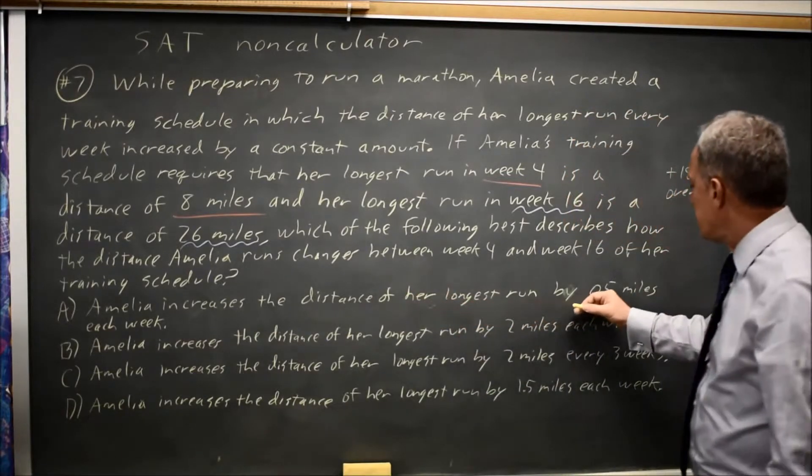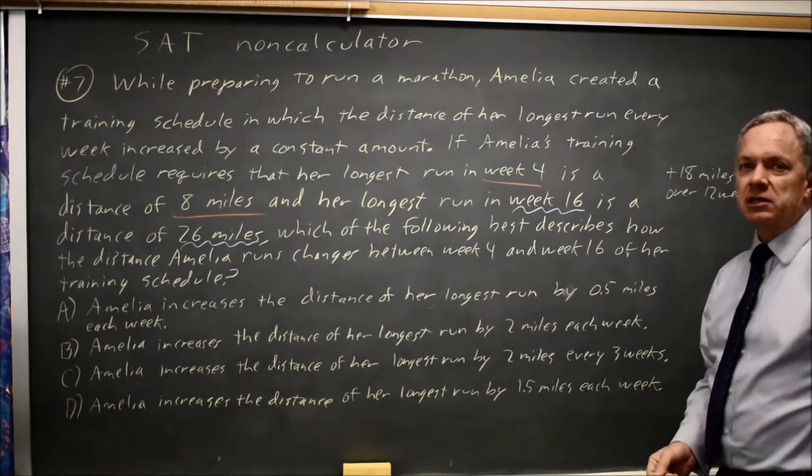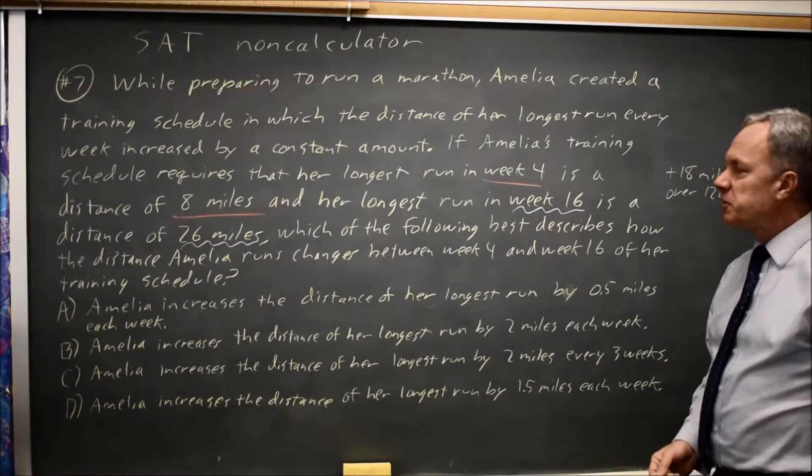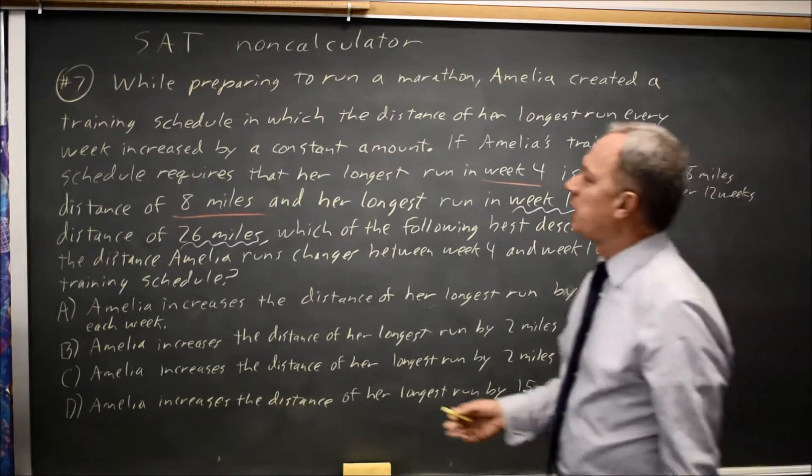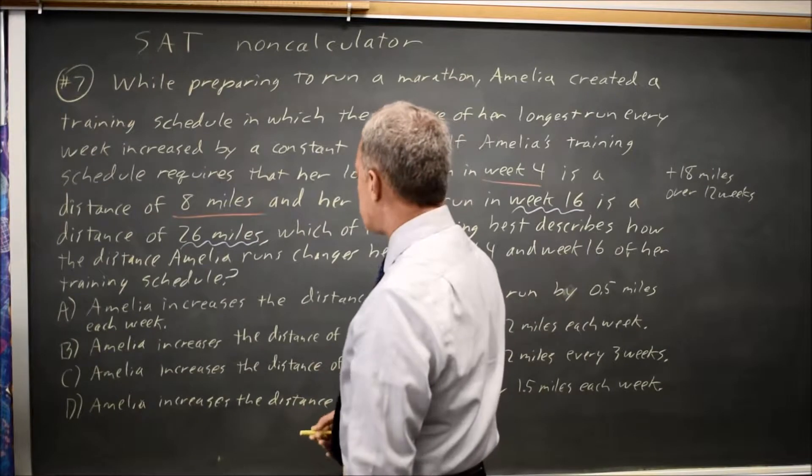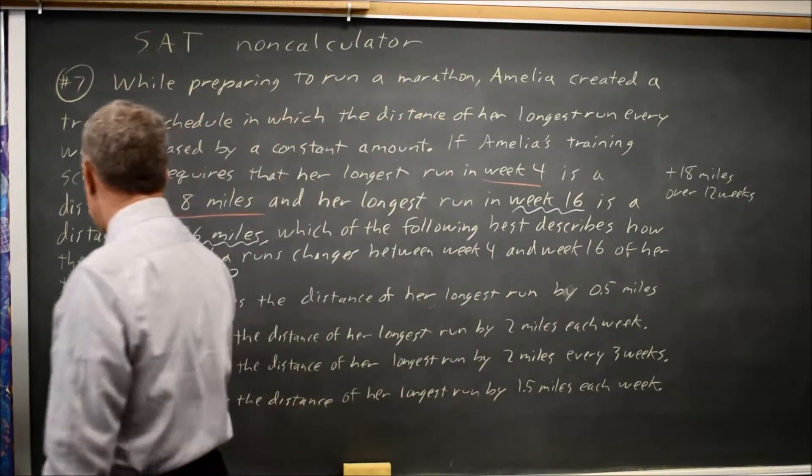Adding one-half mile per week in twelve weeks, twelve times a half mile would be a six-mile increase. That only takes her from eight miles in her run to fourteen miles in a run, and that is not sufficient.